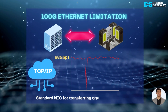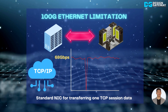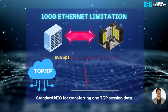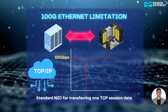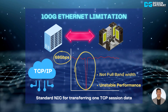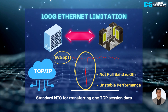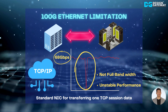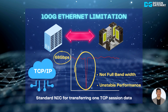However, connecting to a 100G Ethernet system by using the 100G standard network card, only about 68 Gigabit per second can be achieved — or 68% of the maximum bandwidth of 100G Ethernet. Besides, sometimes the network performance drops because the CPU and OS switch to handle other tasks.